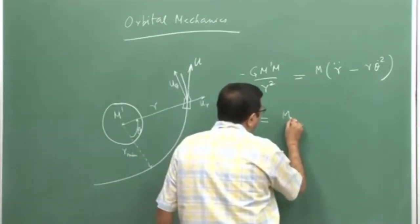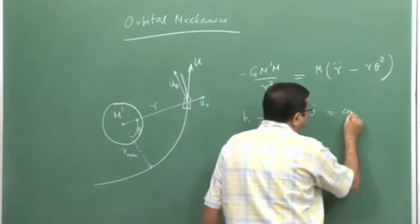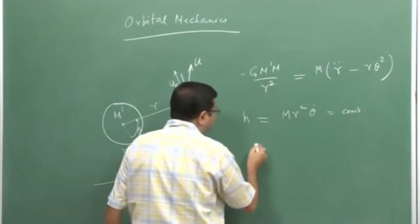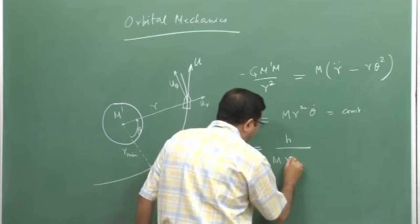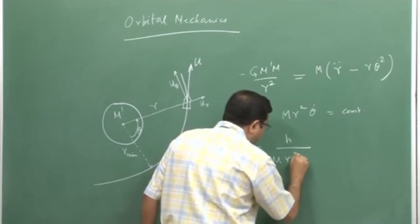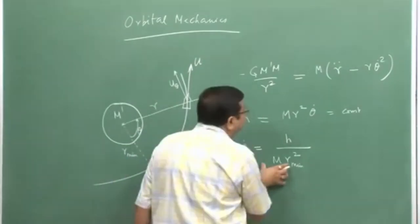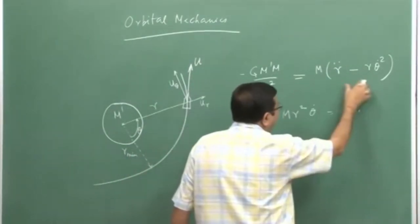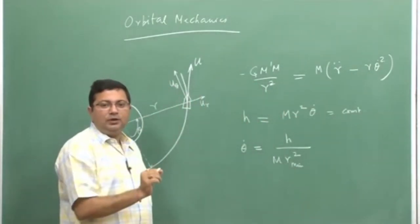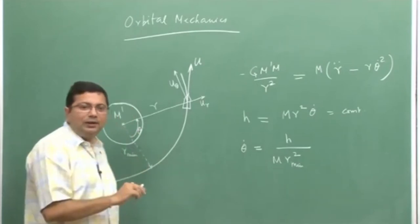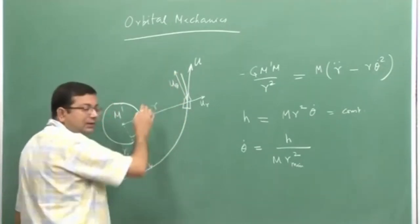The angular momentum is equal to m r squared theta dot, which equals a constant. From here we get an expression: theta dot equals h upon m r_min squared. We then substitute this back into the equation and rearrange to get an expression for r — the path at a given instant, which is the distance of the satellite from the center of the heavenly body at any instance.